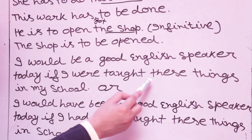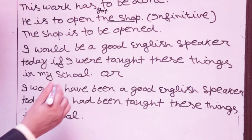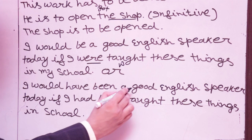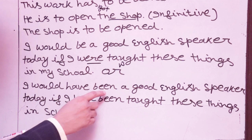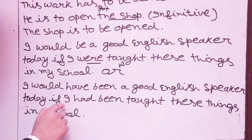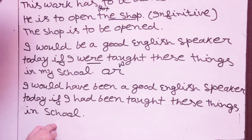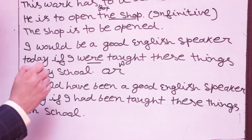'I would be a good English speaker today if I was taught these things in my school.' The alternative past tense of modal form: 'I would have been a good English speaker if I had been taught these things in school.' Here 'had been taught' — past tense of modal structure — uses have + been + third form. Both sentences give the same meaning.